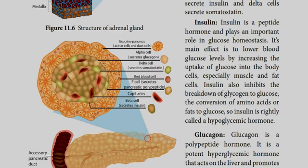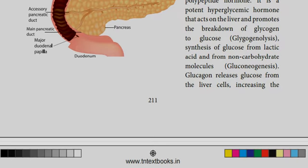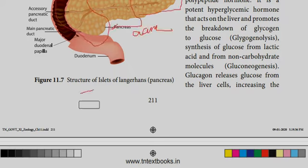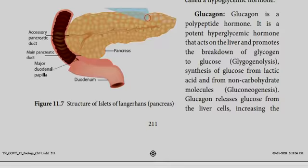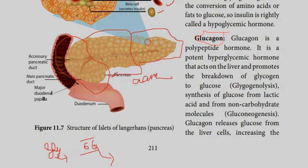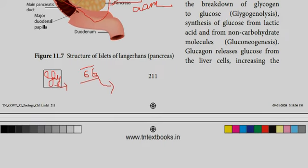Now let's talk about insulin. Insulin is secreted when there is glucose in the blood. What do you want to do with this glucose? It is used for metabolism in body cells. You also store it as glycogen in your liver. This is the role of insulin.